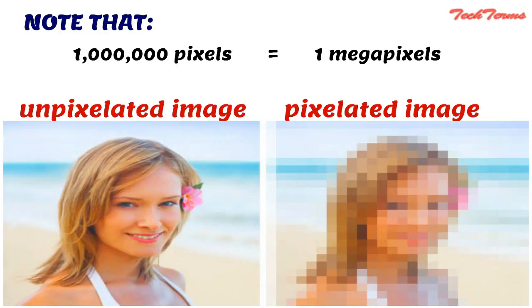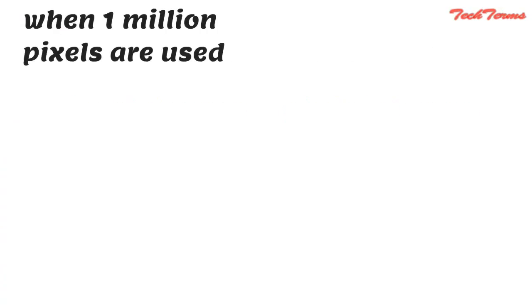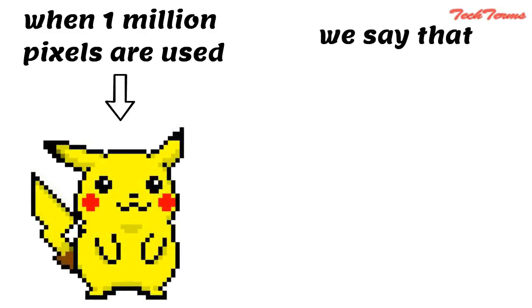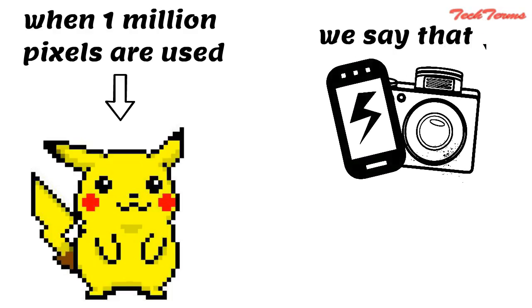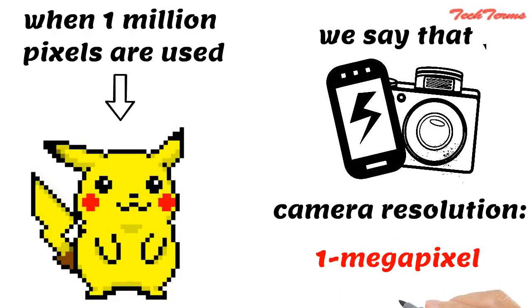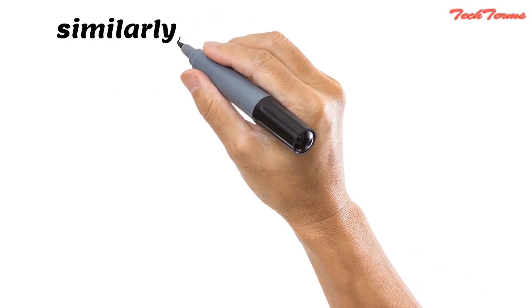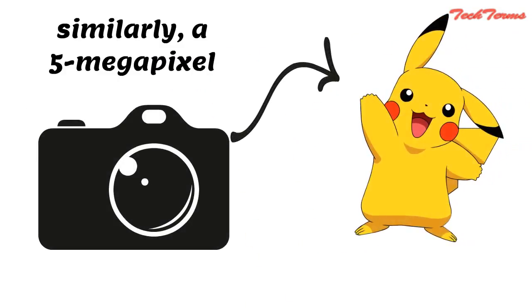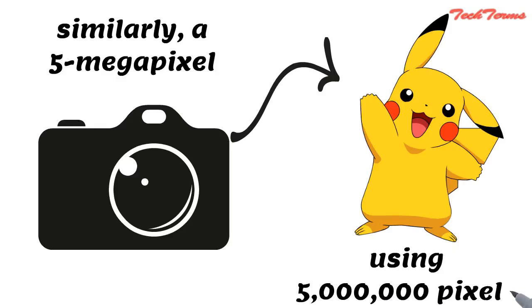A pixelated image is one in which you can see individual pixels. When 1 million pixels are used to create an image, we say that the smartphone or digital camera has a camera resolution of 1 megapixel. Similarly, a 5 megapixel camera will produce an image using 5 million pixels.